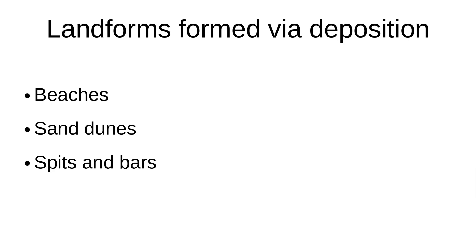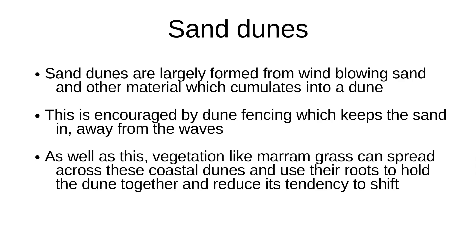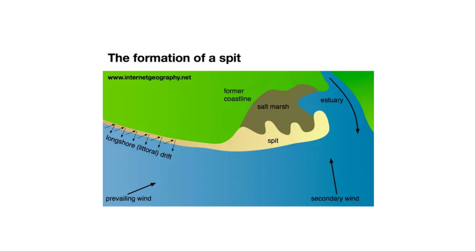There are also other landforms formed via deposition. Beaches are formed through the deposition of sand. Vegetation like marram grass can spread across coastal dunes, using their roots to hold the dune together and reduce its tendency to shift. A spit occurs from longshore drift when the movement reaches a sharp turn in the coast inwards, causing material to extend in that particular direction, forming a spit — an extension of the coast away from the mainland. One characteristic of a spit is how it continually curves as it extends outwards, due to the force of the waves shifting material in that general direction.